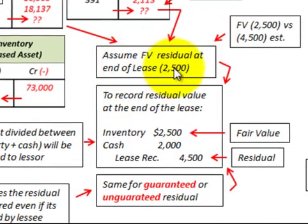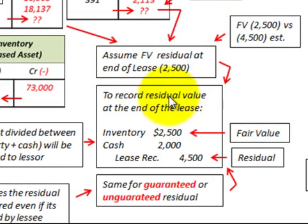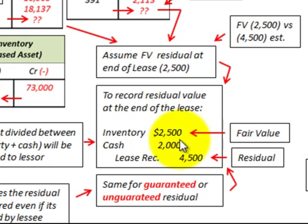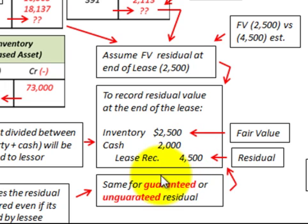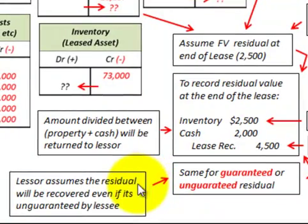Assuming the fair value of the residual at the end of the lease is $2,500 — originally estimated at $4,500 but determined to be $2,500 five years later — we record it as follows: debit inventory for $2,500 (the fair value of the asset), debit cash for $2,000, and credit the lease receivable for $4,500. These entries are the same for both guaranteed and unguaranteed residual value, since the lessor assumes recovery of the residual.